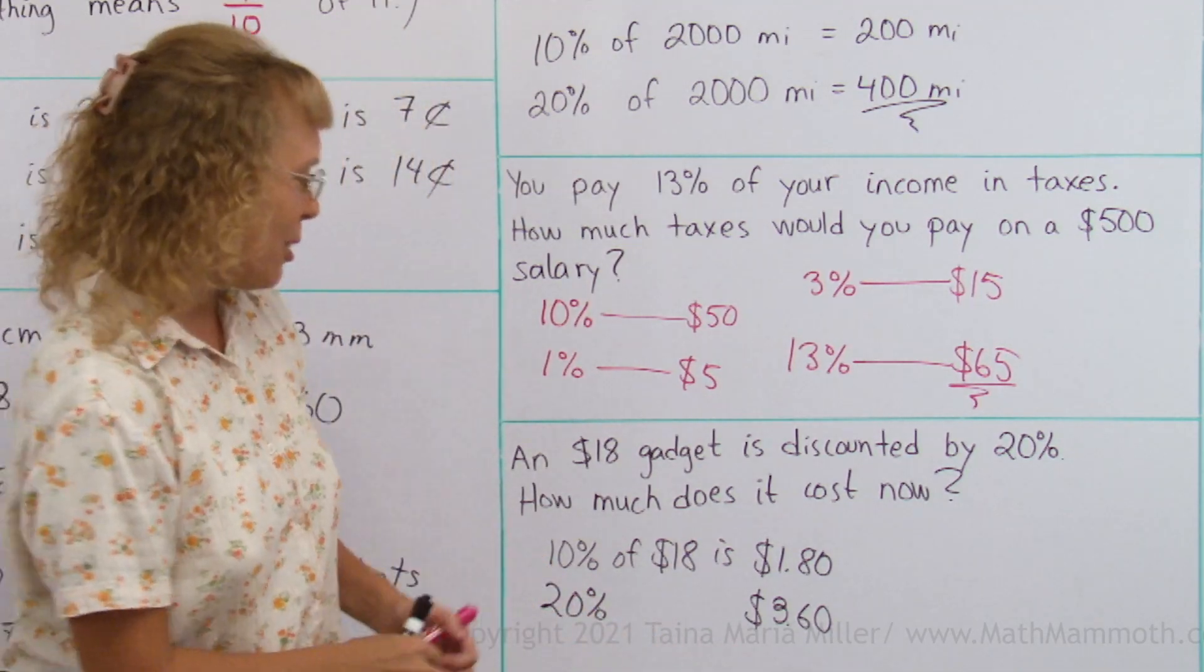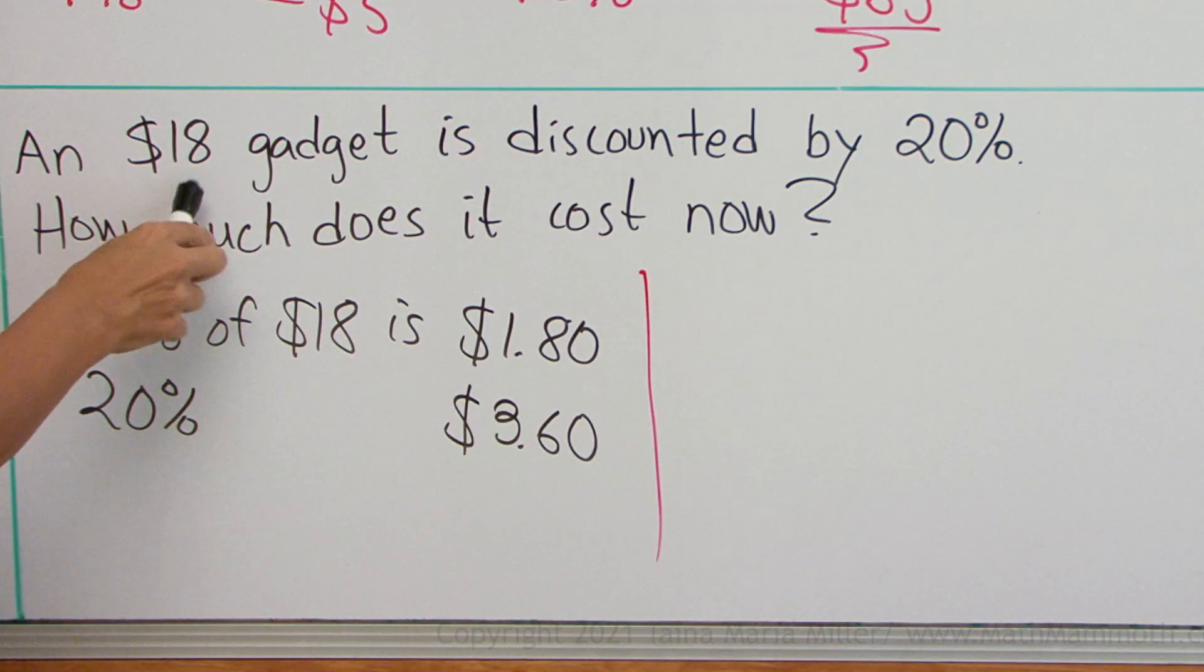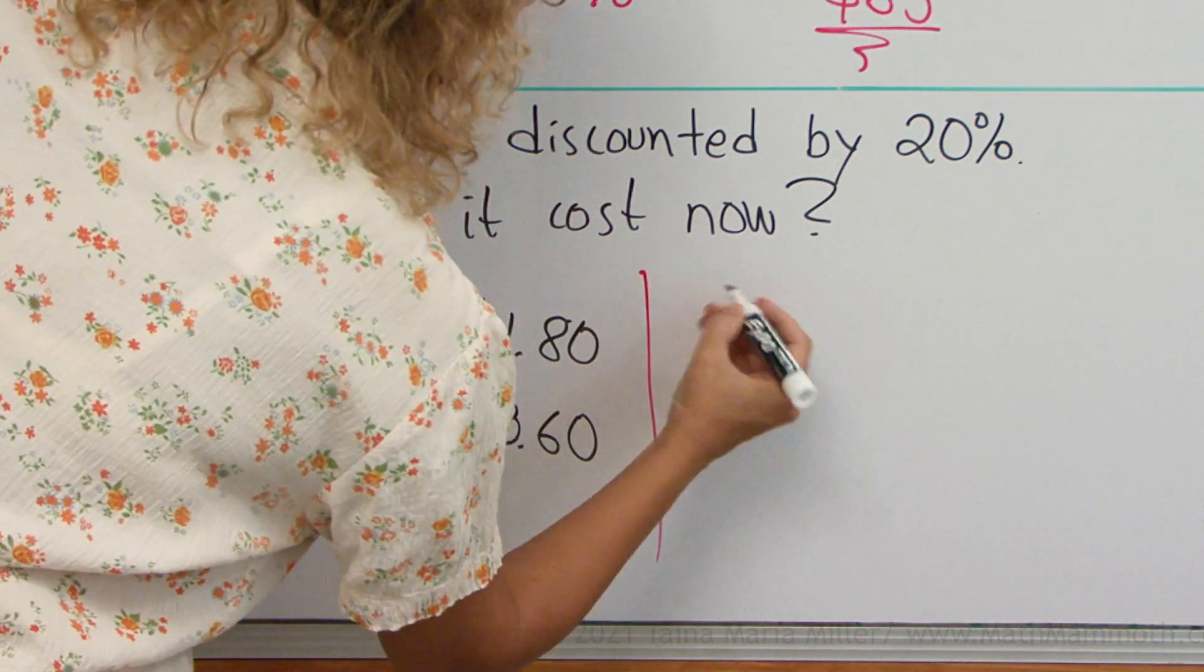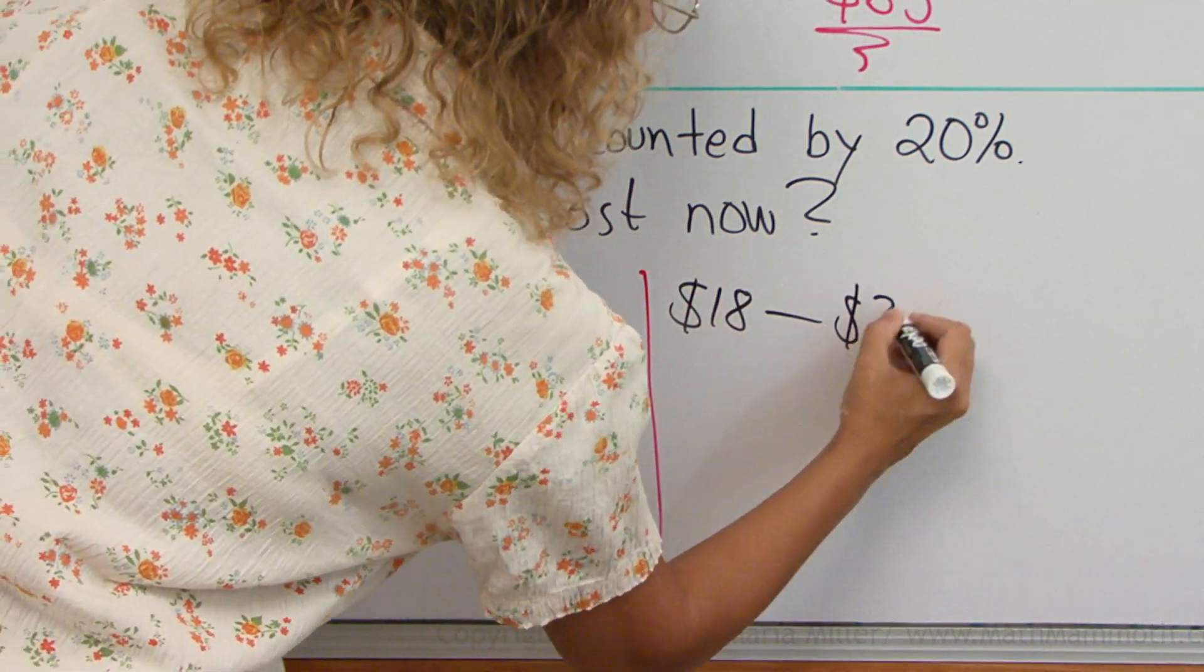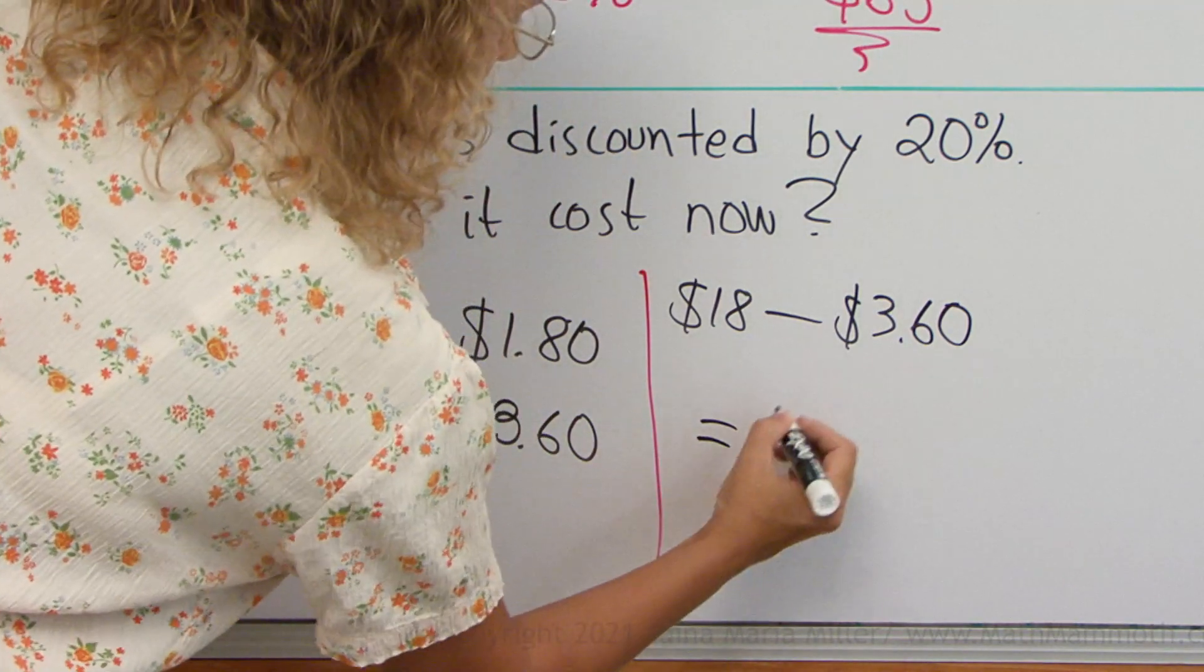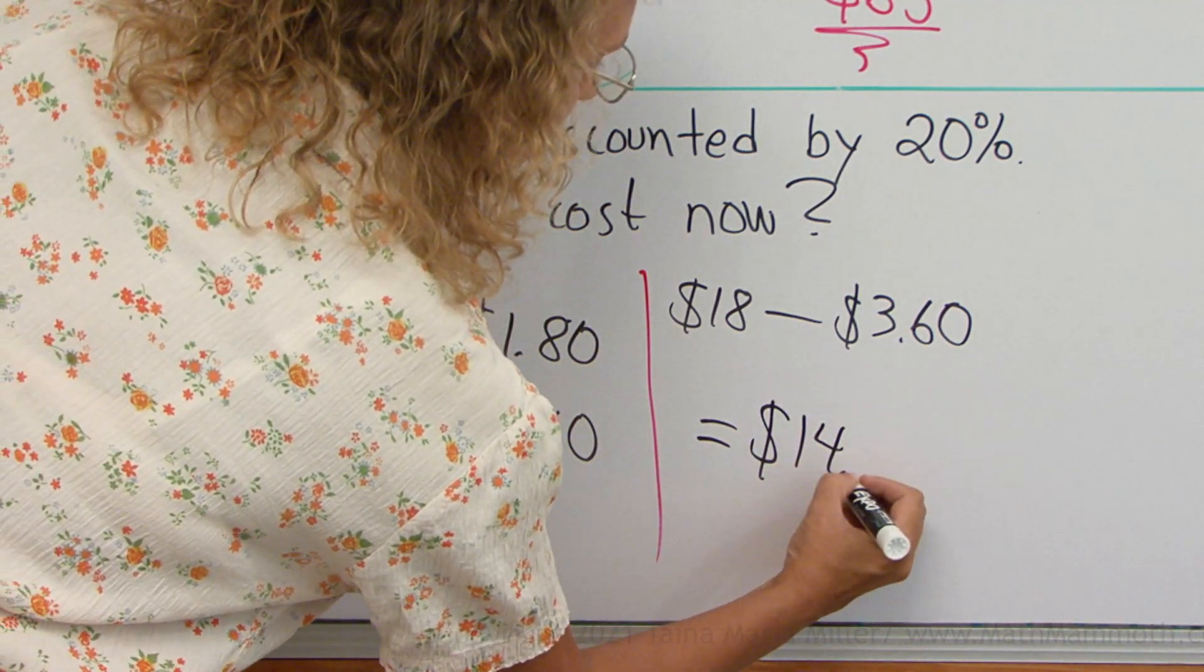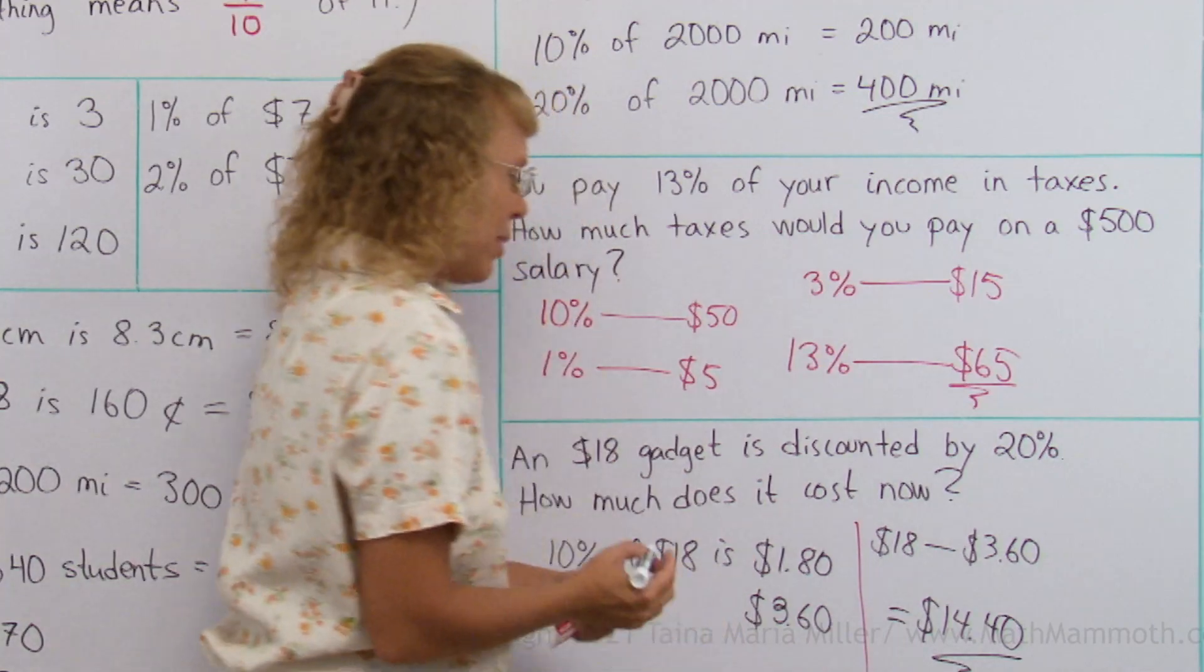And now you subtract. Now take $18 minus $3.60, and that is $14.40. That's the discounted price.